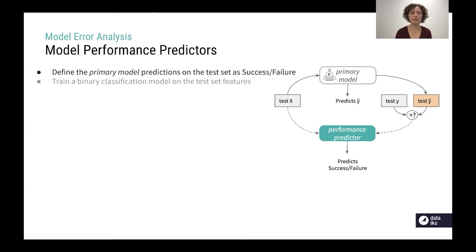Then we have a secondary model that is our model performance predictor. It's a binary classification model that is trained on the test set features and also on this binary categorization of the prediction as either a success or a failure. So this secondary model is trained to predict whether the primary model succeeds or fails.